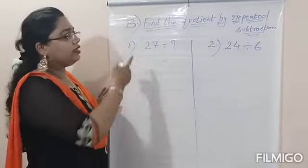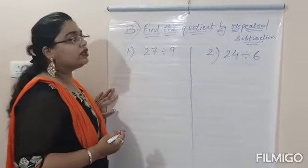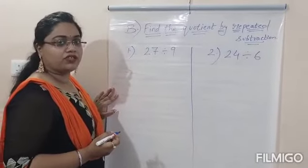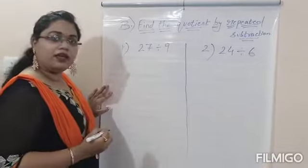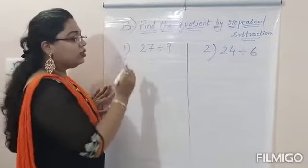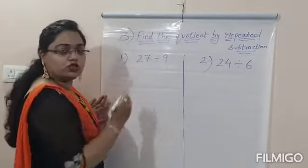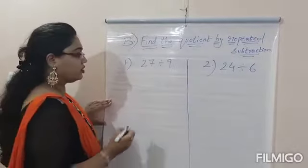Students, in the next question B, we will find the quotient by repeated subtraction. Now let's see the first question: 27 divided by 9. Here in this question, you have to find out its quotient by repeated subtraction.